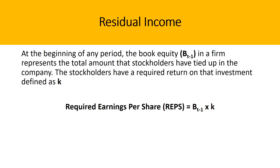At the beginning of any period, the book equity in a firm represents the total amount that stockholders have tied up in the company. The stockholders have a required return on that investment, defined as K. If we multiply the book equity of that firm by the required return, we get our required earnings per share, also known as REPS.